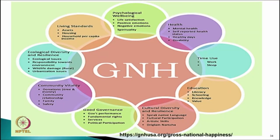For example, one model says there are various domains defining our happiness: living standards, assets, housing, household per capita income. Ecological diversity and resilience covers ecological issues, responsibility towards environment, wildlife damage especially in rural areas, and urbanization issues. These are issues contributing to well-being or happiness when we are talking about national happiness.